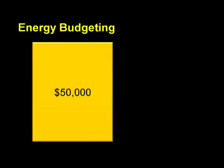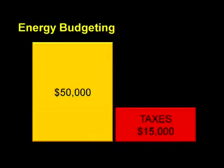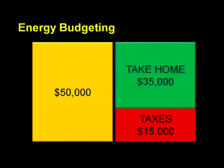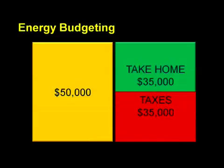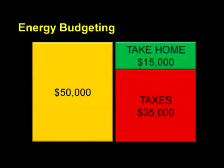Suppose that your household earns $50,000 a year, and your total taxes are 30%, or $15,000. This leaves you $35,000 to buy food, pay for your shelter, purchase gasoline for your car, and maybe do a few other things besides. If this suddenly flipped around, and you found yourself with only $15,000 of take-home pay, your situation would change drastically. Perhaps you could only afford food and shelter while the car, electronics, and maybe vacations became distant memories. Your life would be forcibly simplified in terms of the number of things that you could afford to buy or do.